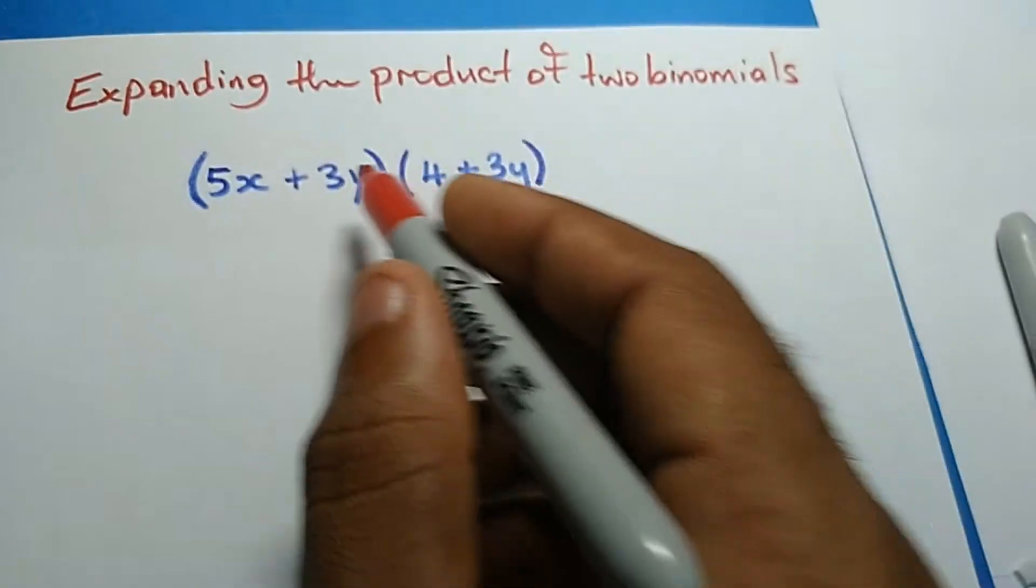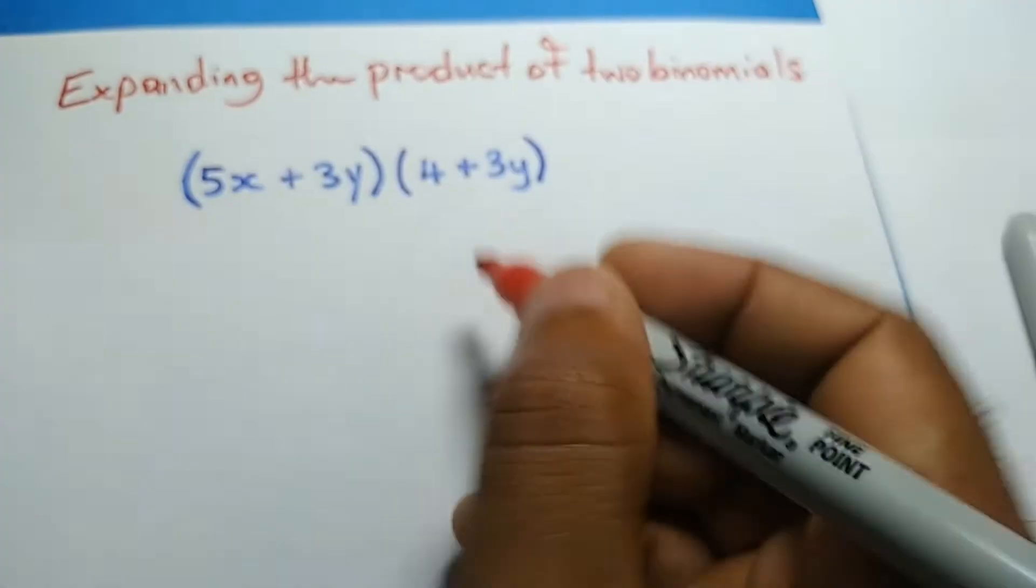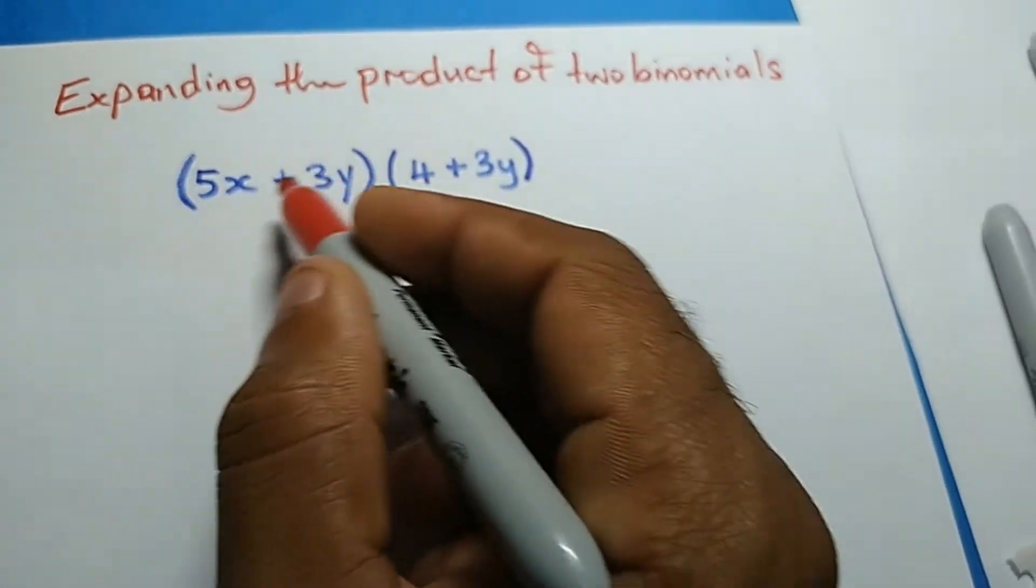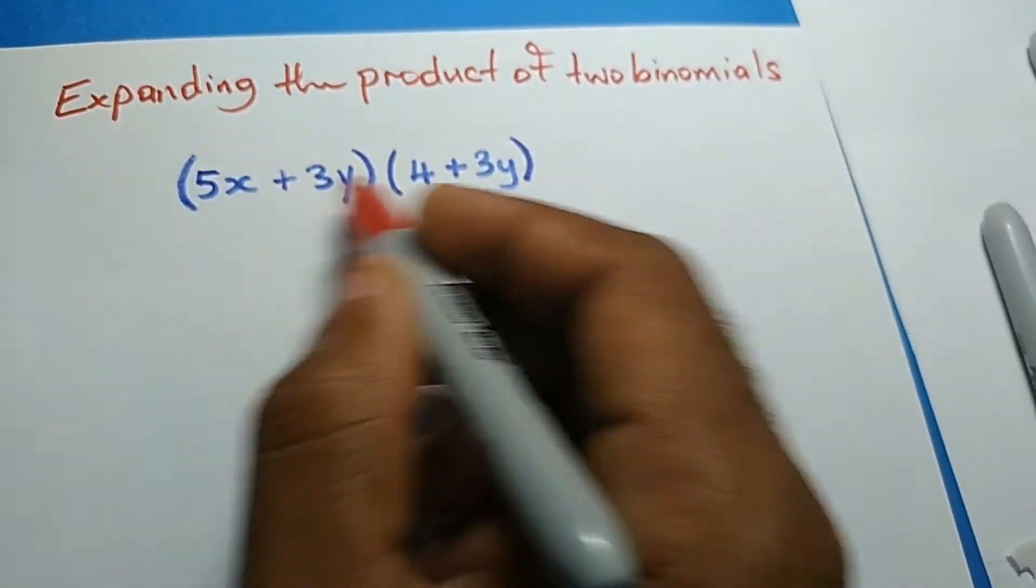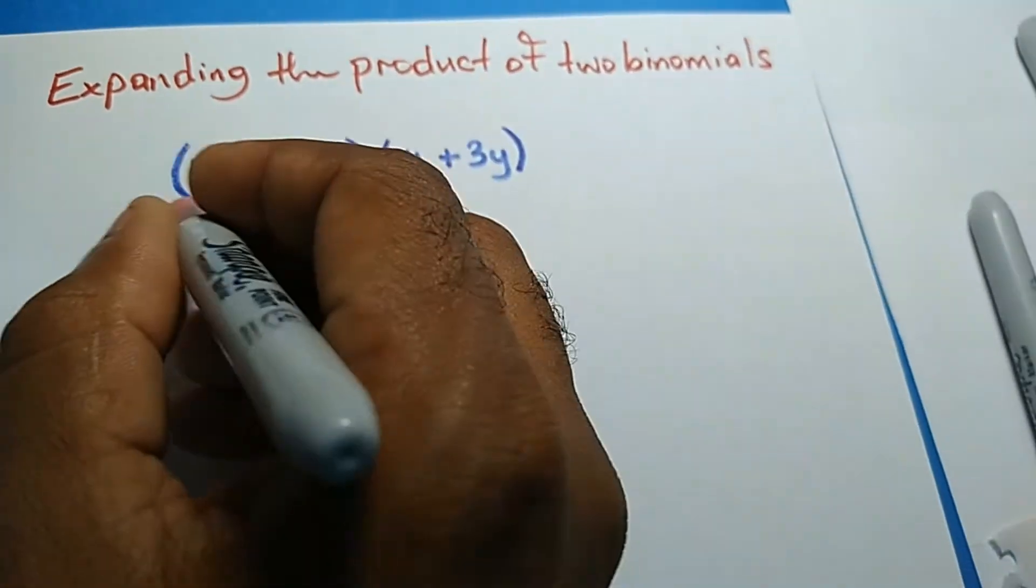I'm going to do this as simply as possible. The approach I'll take is to write one of these brackets twice - it doesn't really matter which one. So I'll take the first one and write it twice.